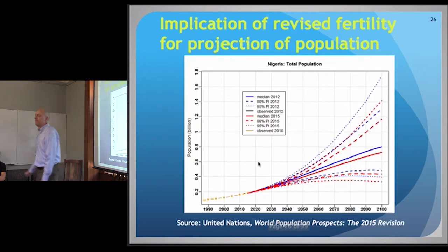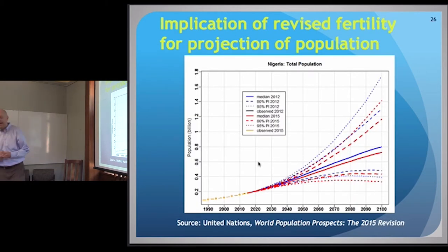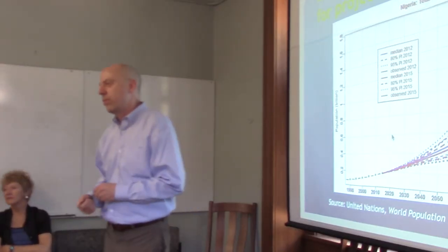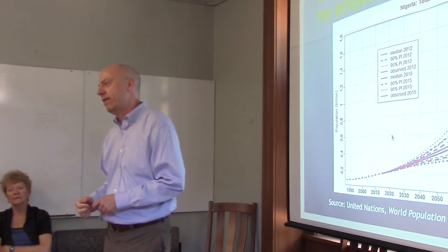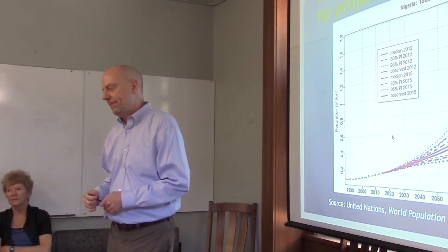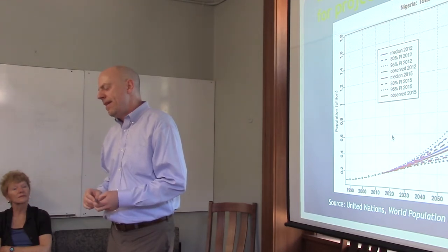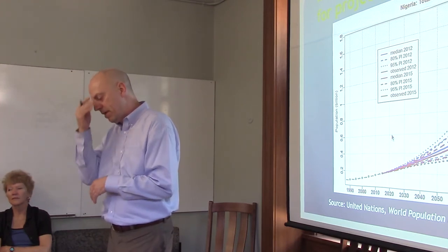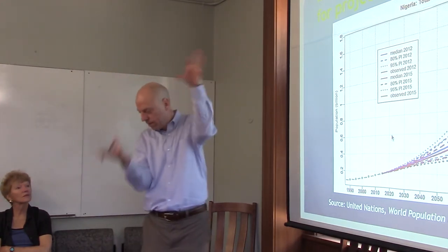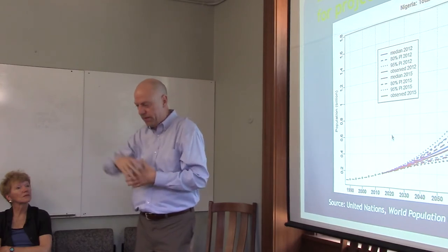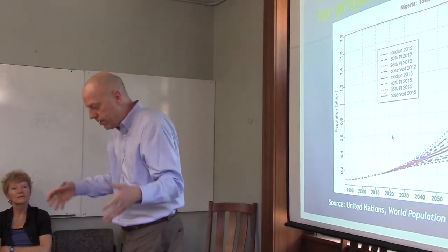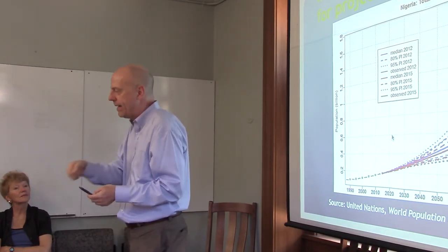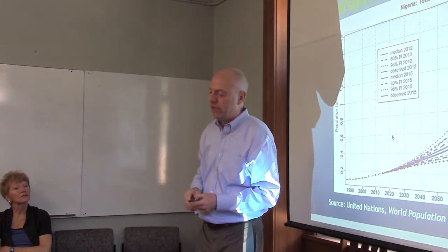Is there a plan to incorporate uncertainty around the current TFR estimate? Yes, that's actually our highest priority in terms of additional uncertainty to incorporate. It may be as simple as using a bell-shaped distribution around the central estimate and sampling from it each time we make a projection.